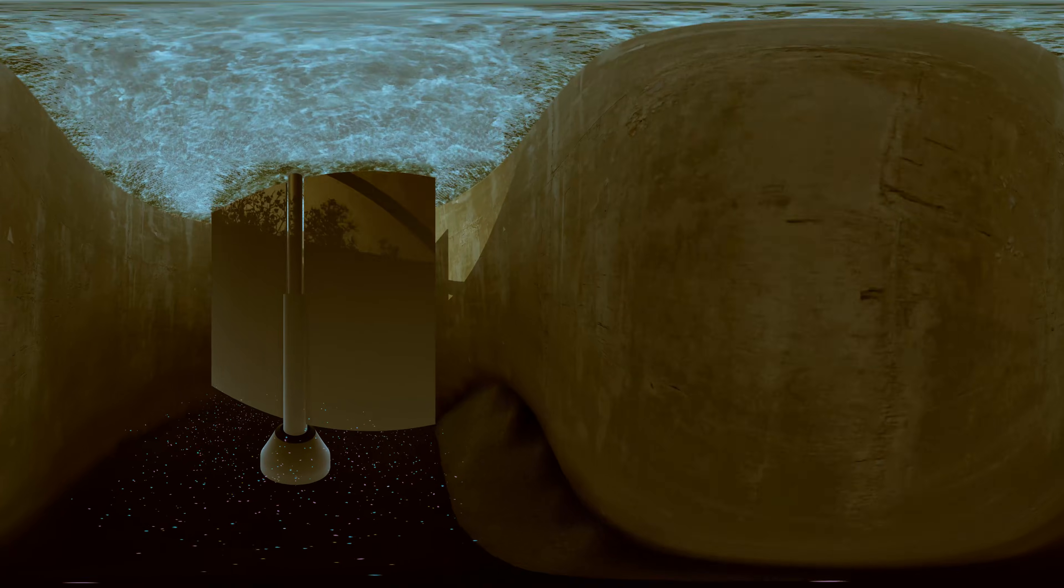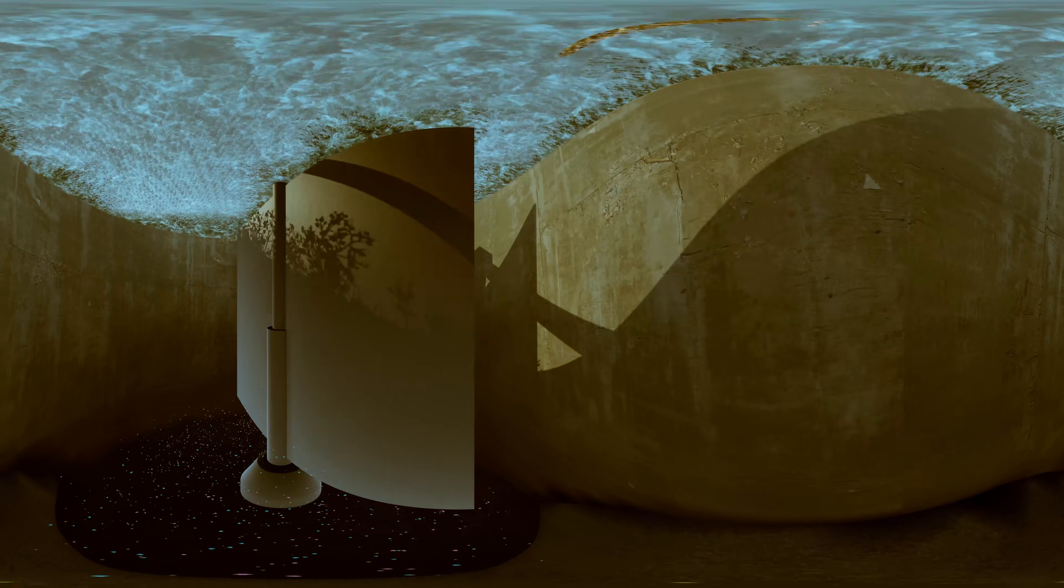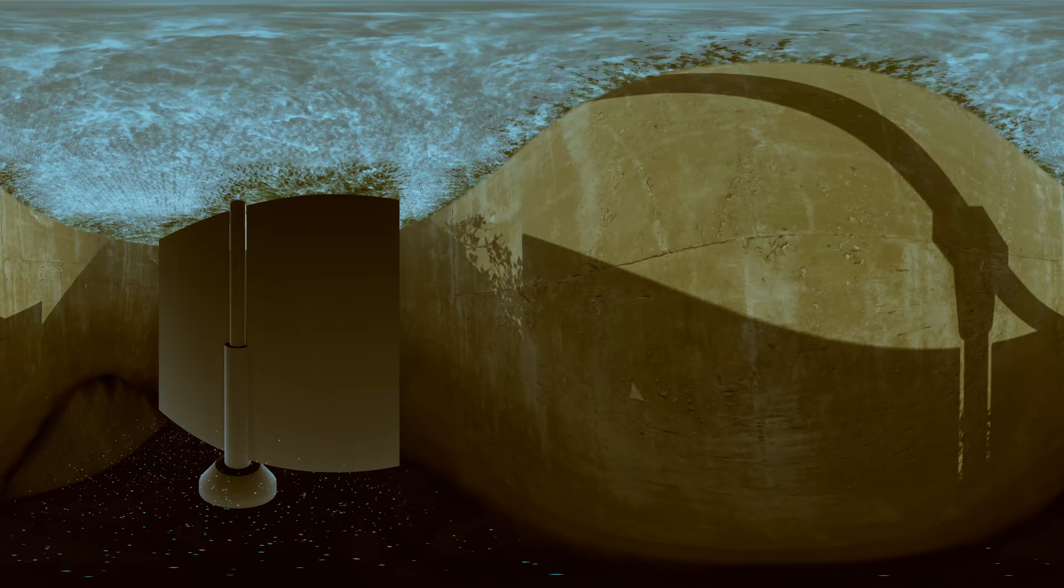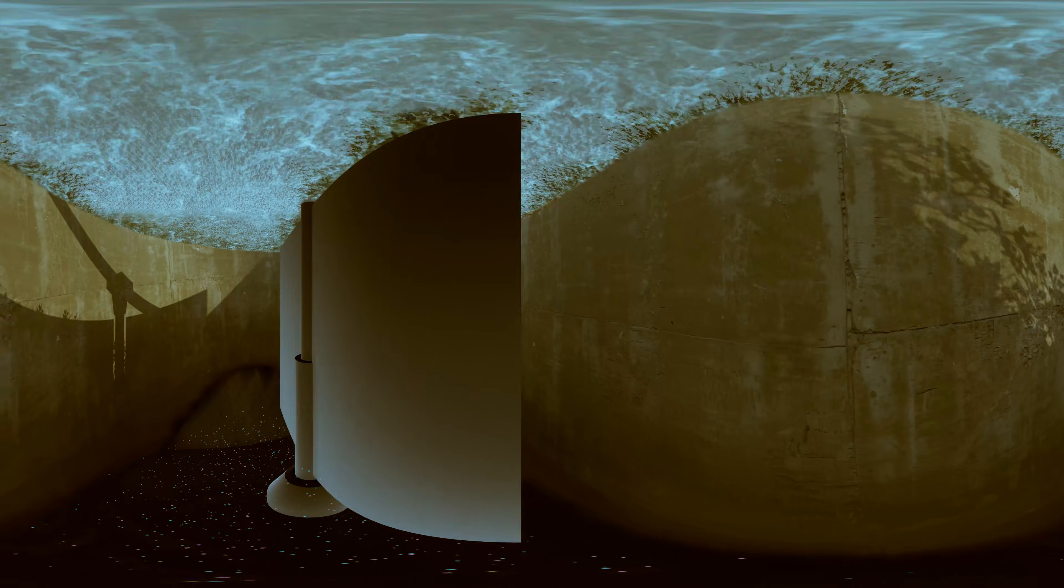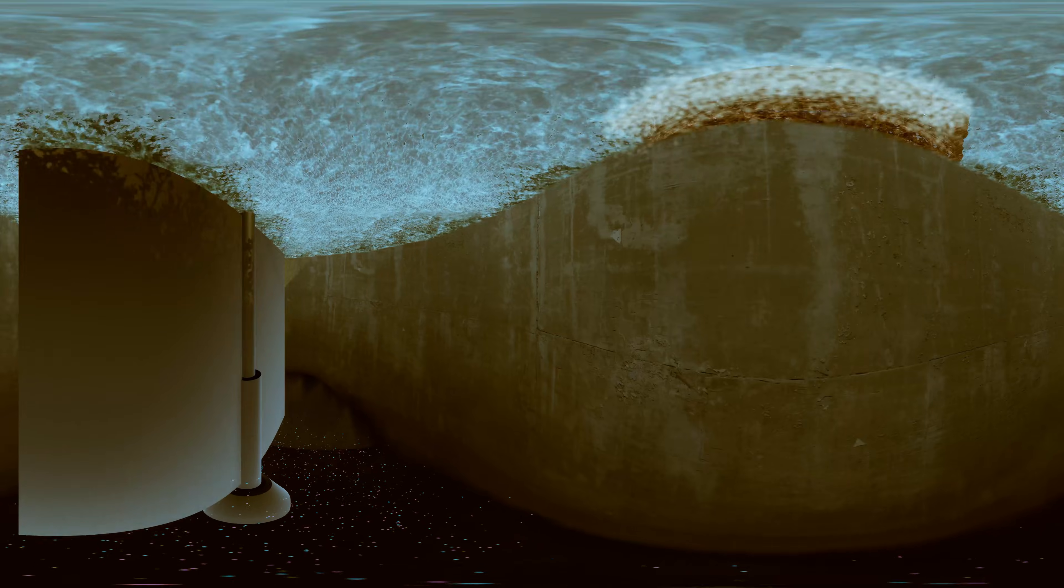The final stage of the process takes place in a settlement tank, where the bacteria is separated from the water and stays at the bottom, while the clean water flows over the top and back to the streams and rivers.